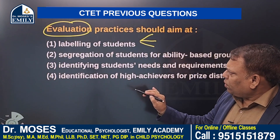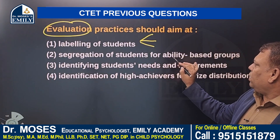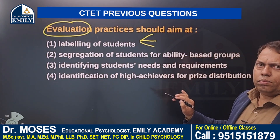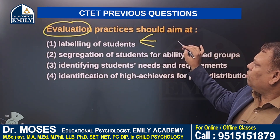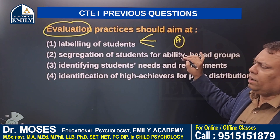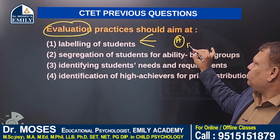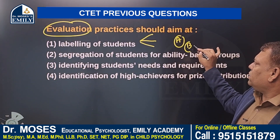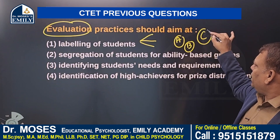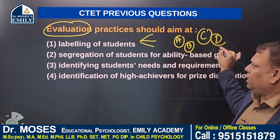Option number two: segregation of students for ability-based groups — for example, A section students: gifted toppers; B section students: above average; C section students: average; D section students: dullards.